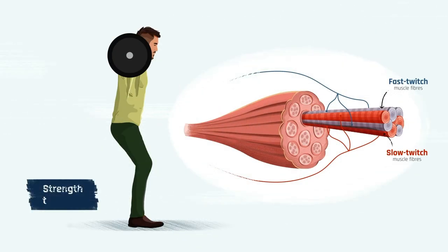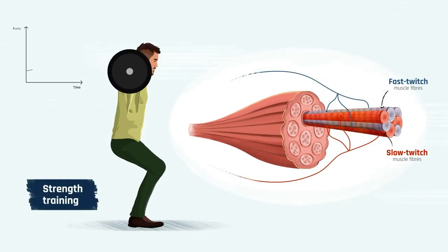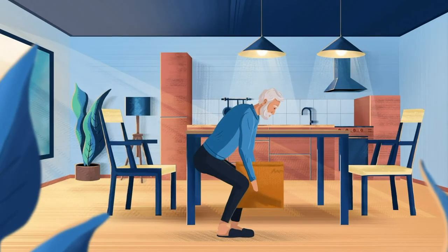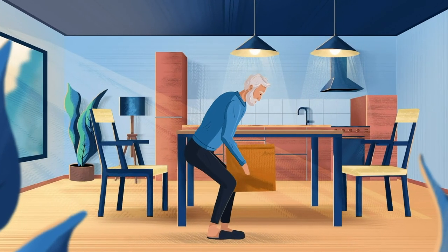The good news is that through strength training, we can keep both slow and fast twitch fibers active and make our muscles stronger at any age.